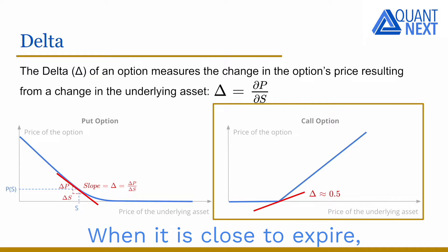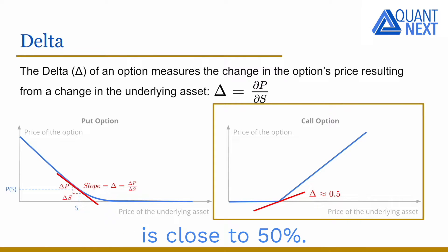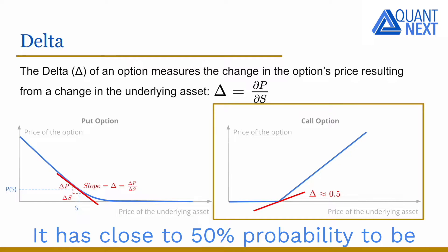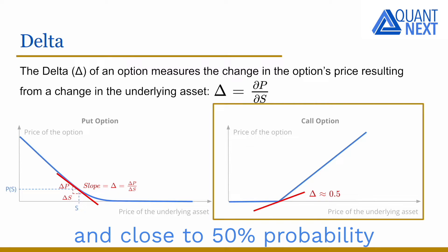When it is close to expiry, the delta of an at-the-money option is close to 50%. It has close to 50% probability to be equal to 1 if the option is exercised, and close to 50% probability to be equal to 0 if it is not.